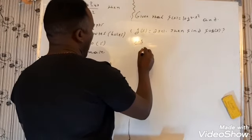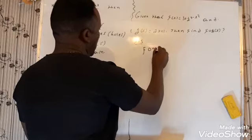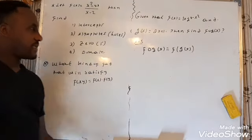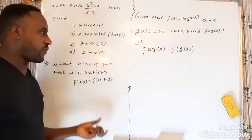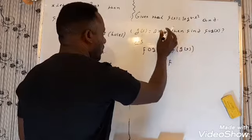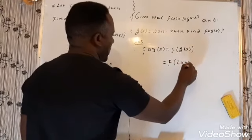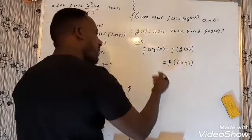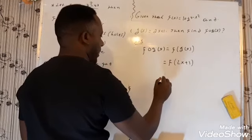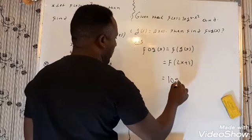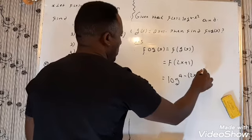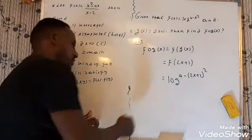Let me explain what the composition of this function is. In general, this means f∘g(x). First of all, we have to put g(x) inside f. So we have this, and then we substitute it in place of x in this function. This gives us exactly the logarithm of four minus (2x+1) whole squared.